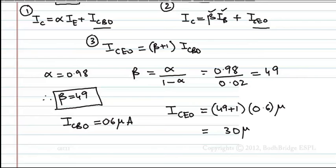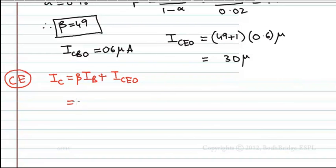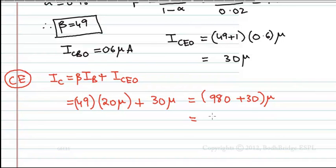Therefore, let us apply the formula now. In common emitter configuration, since he has given the configuration as common emitter, IC equals βIB plus ICEO. Now beta is 49 times IB which is 20 microamperes plus ICEO which is 30 microamperes. This equals 980 plus 30 microamperes, which is equal to 1010 microamperes.